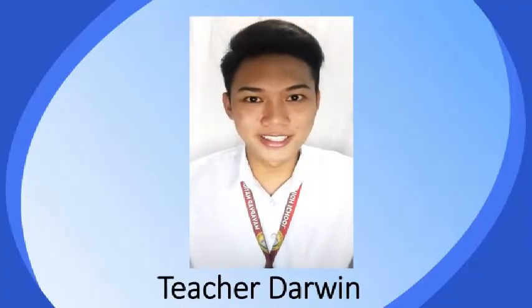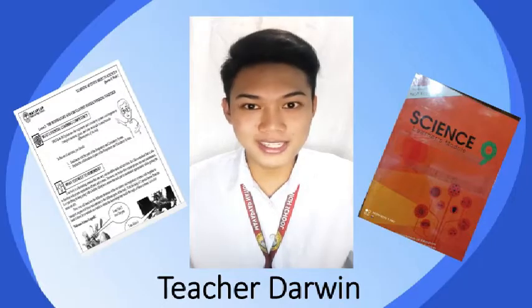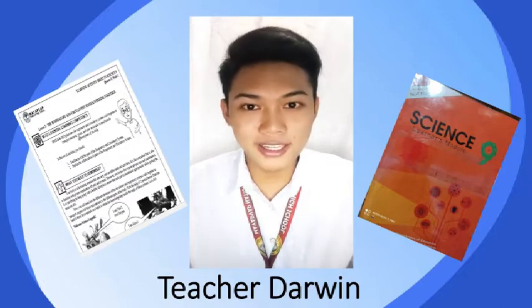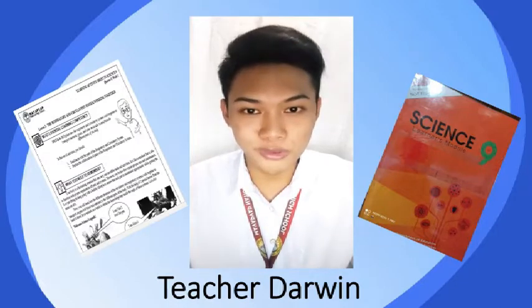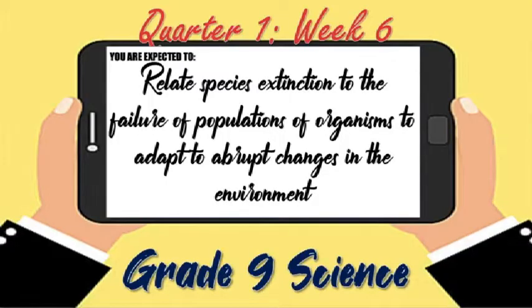Hey, MyLenians! Teacher Darwin here. Today's video tutorial is all about the topic. It's best to have your activity sheets beside you and to have your book open. But a friendly reminder, do not write anything on your activity sheet or on your book. So sit back, watch, learn, and let the knowledge flow. In this video lesson, you are expected to relate species extinction to the failure of populations of organisms to adapt to abrupt changes in the environment. So without further ado, let's get started.